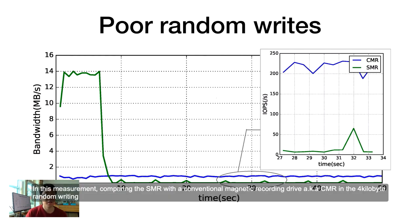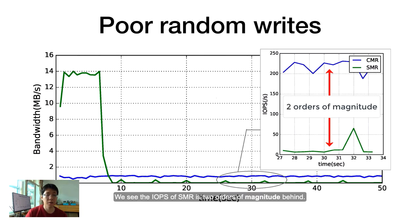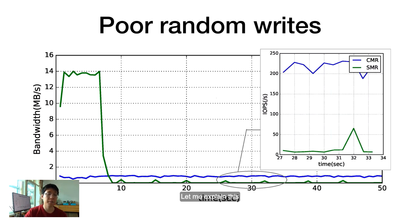In this measurement, comparing SMR with a conventional magnetic recording drive, aka CMR, in four kilobyte random writing, we see the IOPS of SMR is two orders of magnitude behind. Let me explain this.